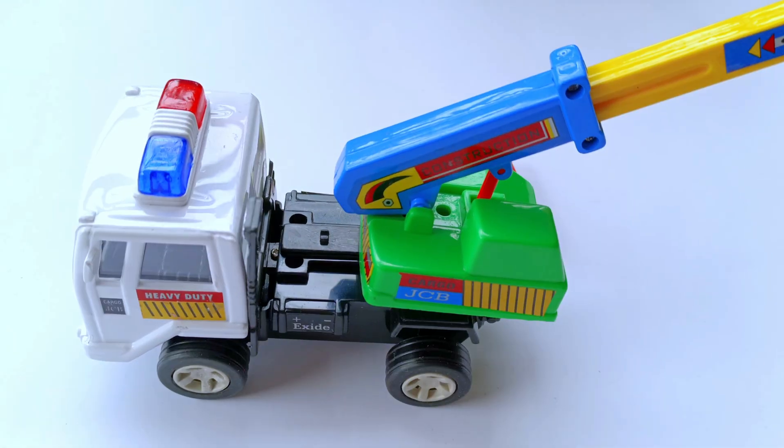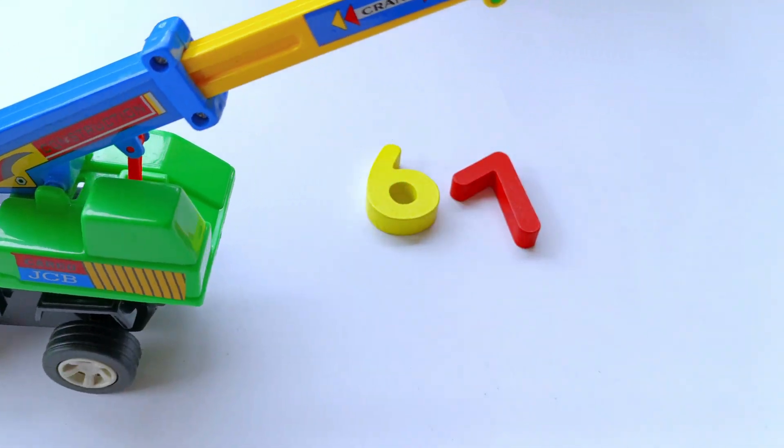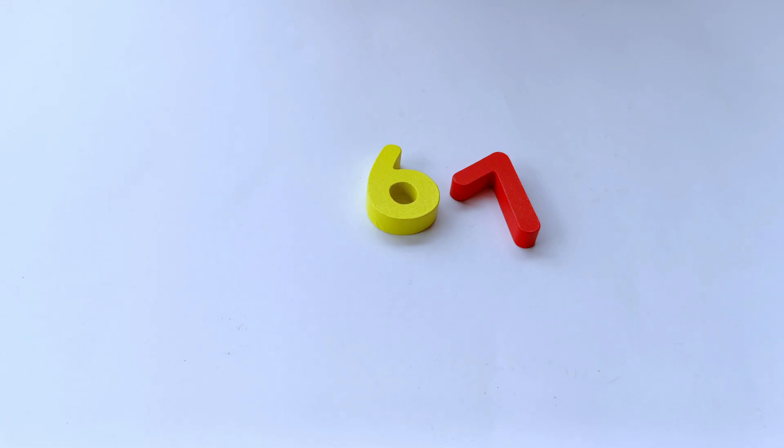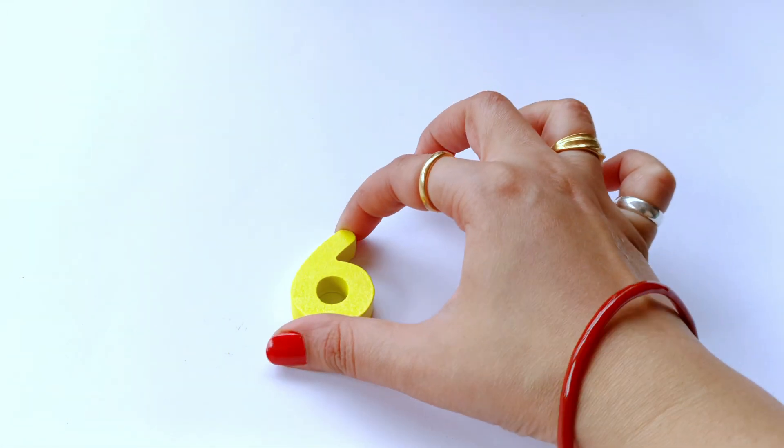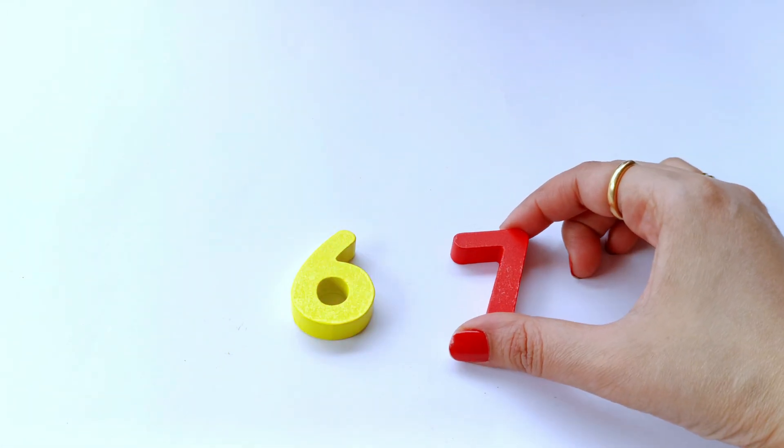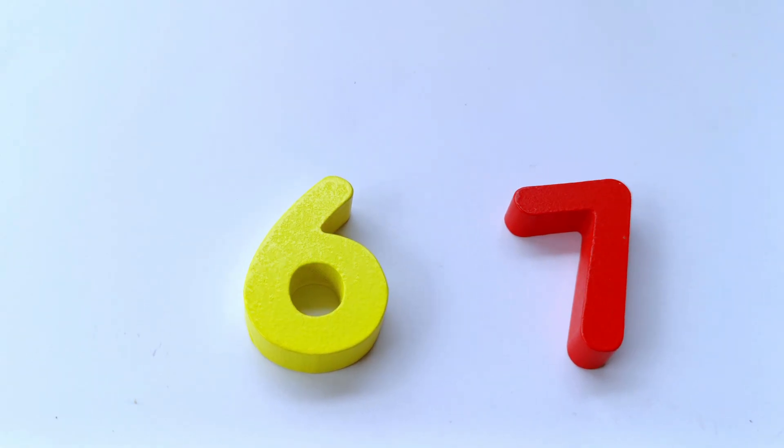Look, it's a green. Oh, it has left some numbers. Can you tell me which numbers and colours are these? Yes, it's yellow colour 6 and red colour 7.